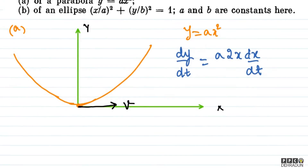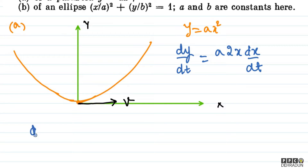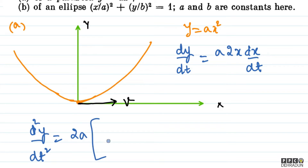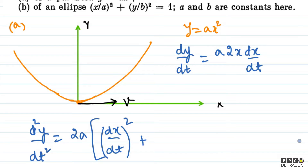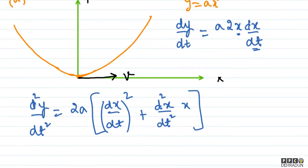Now I am going to differentiate this again. So d²y upon dt² will be: 2a is constant, then differentiating x once gives dx by dt, multiplied by dx by dt, giving 2a times (dx/dt)². Then we add x times d²x/dt² as the second term, so d²y upon dt² equals 2a(dx/dt)² plus 2ax·(d²x/dt²).